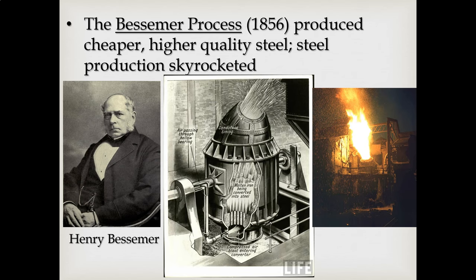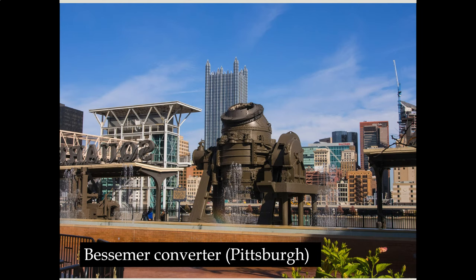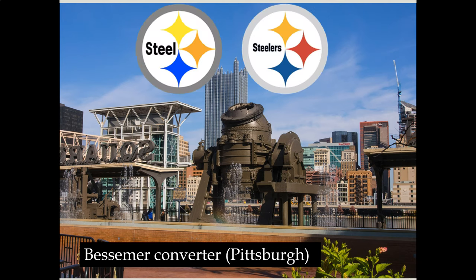What gets steel production leaping forward is the Bessemer Process, an invention of Henry Bessemer, a British metallurgist, who came up with this new process in 1856. This is the Bessemer Converter, where all the process actually takes place. The end result is a cheaper, higher quality steel, and production begins to skyrocket. You see Bessemer Converters being built across all industrial nations. A good example is one in a park in Pittsburgh — the steel city, famously known for its major steel mills in the 1800s and 1900s. That's why the team is called the Steelers, by the way.